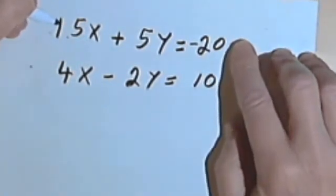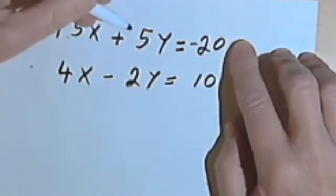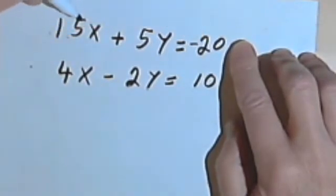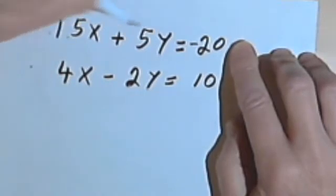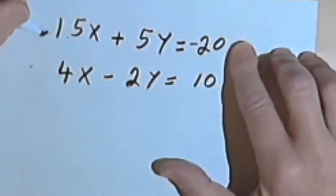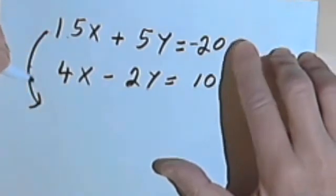The first one, the first equation, I've got a 15 and a 5 and a 20. And all of those numbers are divisible by 5. So we could simplify this whole equation by dividing everything in it by 5.